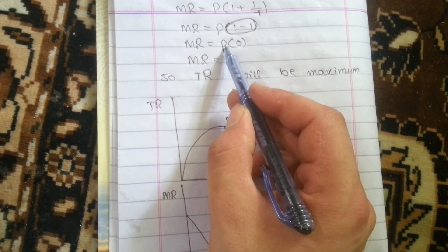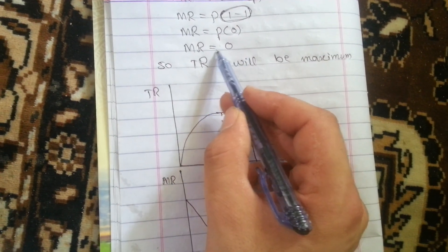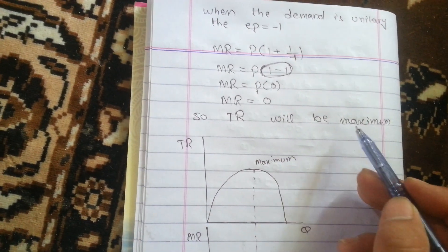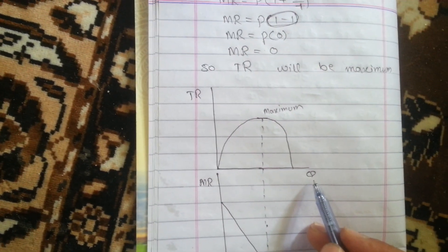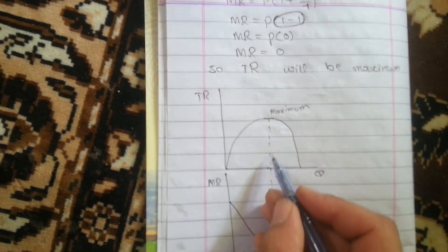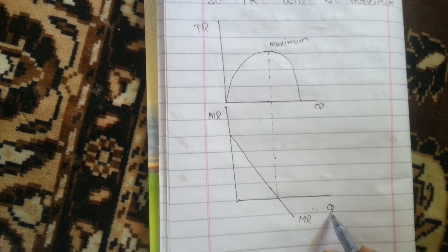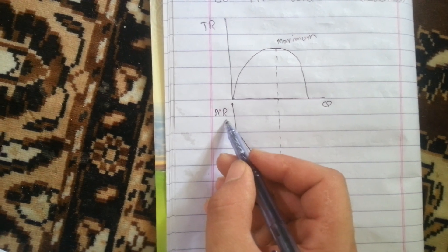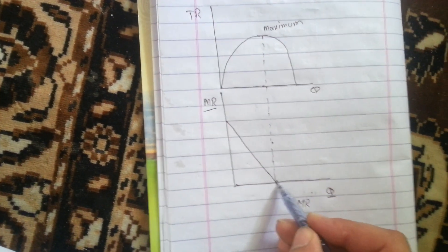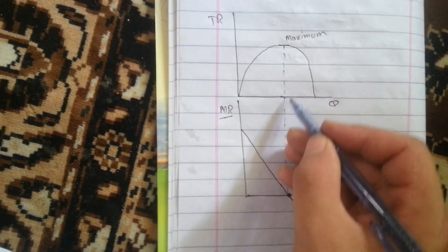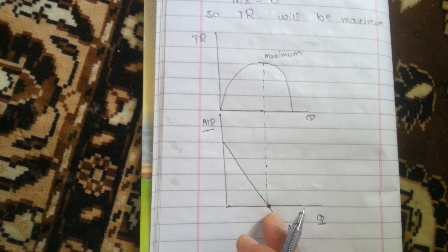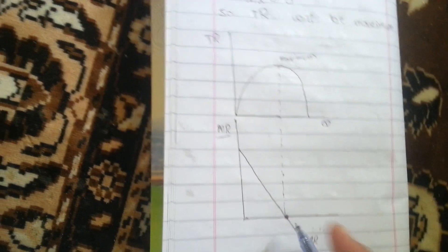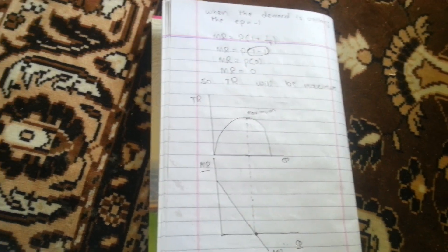So marginal revenue equals zero when demand is unitary elastic, and at this point total revenue is maximum. Graphically, with total revenue on the vertical axis and quantity on the horizontal axis, total revenue is at its maximum. On a second graph with marginal revenue on the vertical axis, marginal revenue equals zero at the same quantity. We conclude: when marginal revenue equals zero, total revenue is maximum.